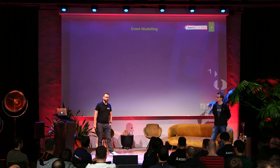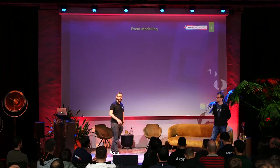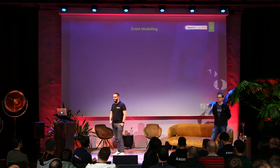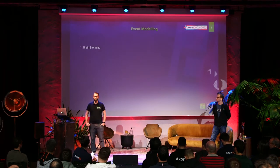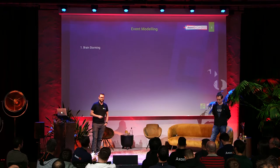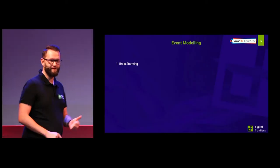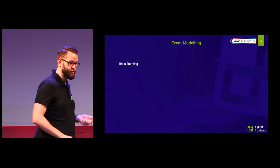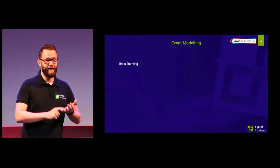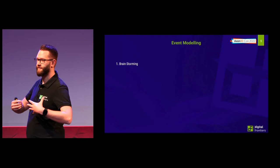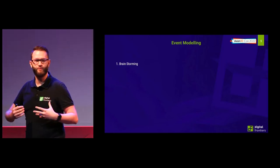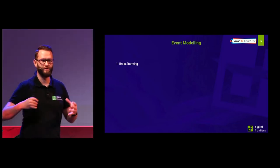You've seen an image of an event model in the previous presentation, and we'll do a live event modeling session later. But first, let's look at how event modeling works phase by phase. Event modeling consists of seven phases, and the first is quite intuitively brainstorming. You gather all the people around the table — UX, UI, marketing, management, developers — and all of them have to talk about the process and collect stickies of events that are happening.